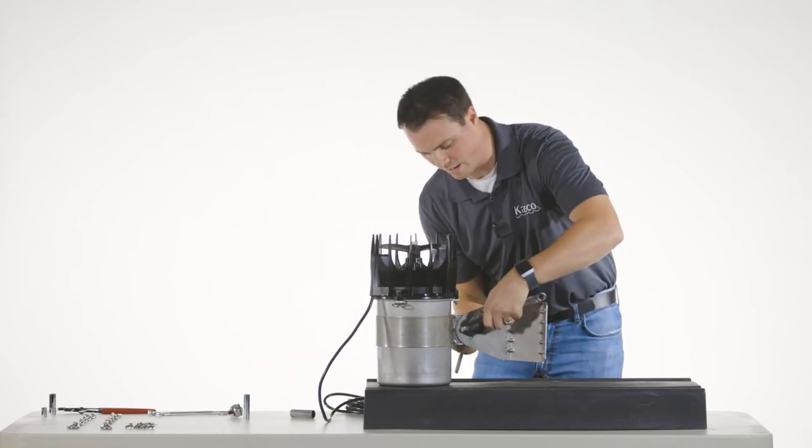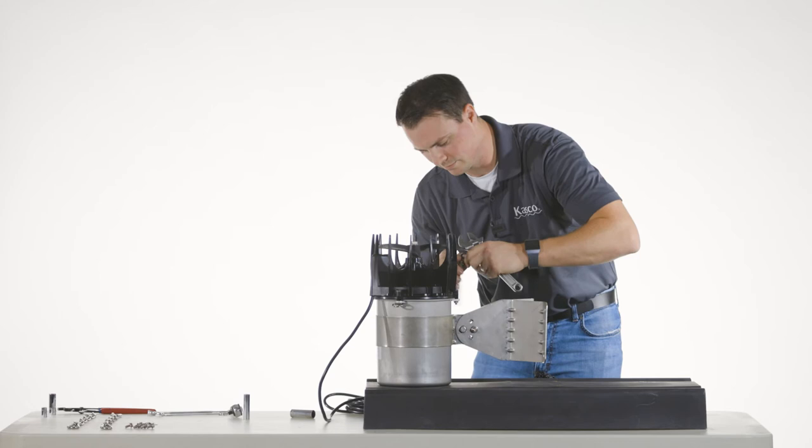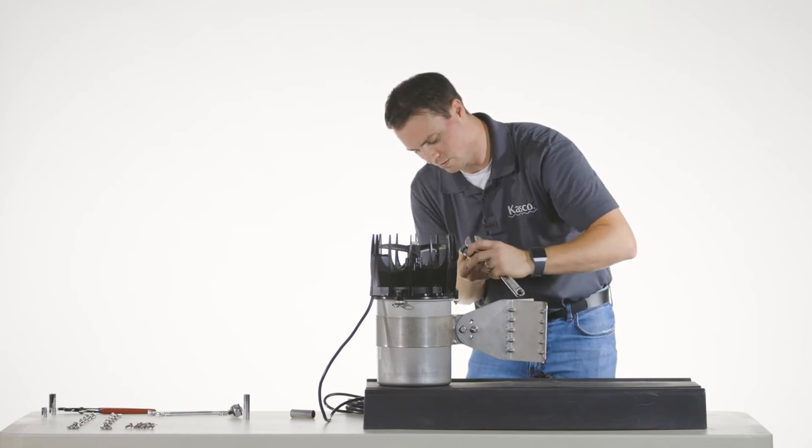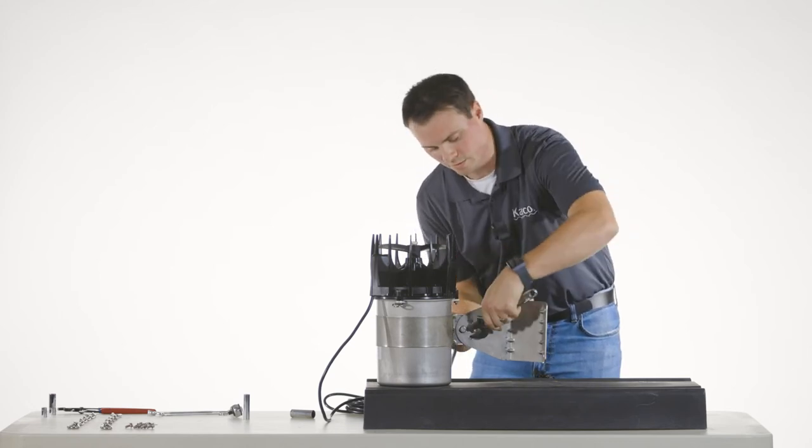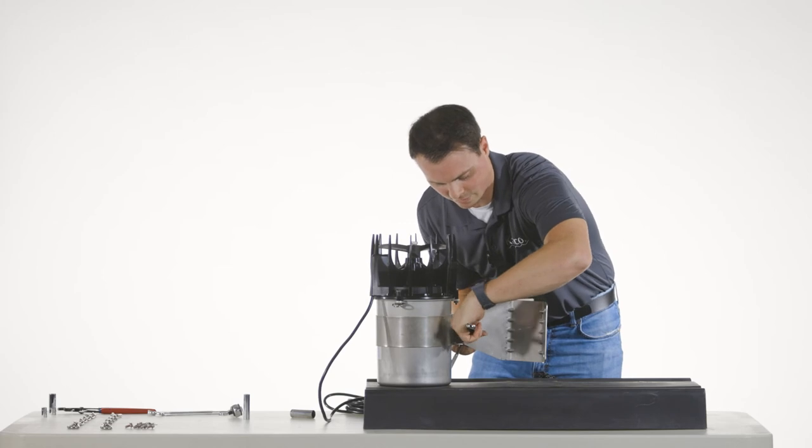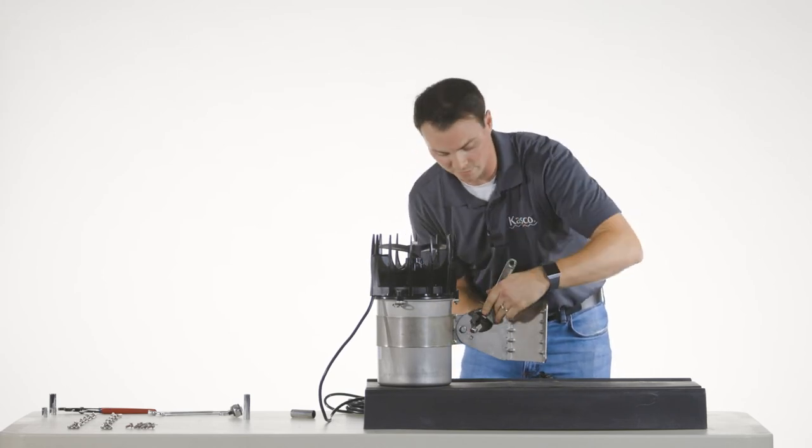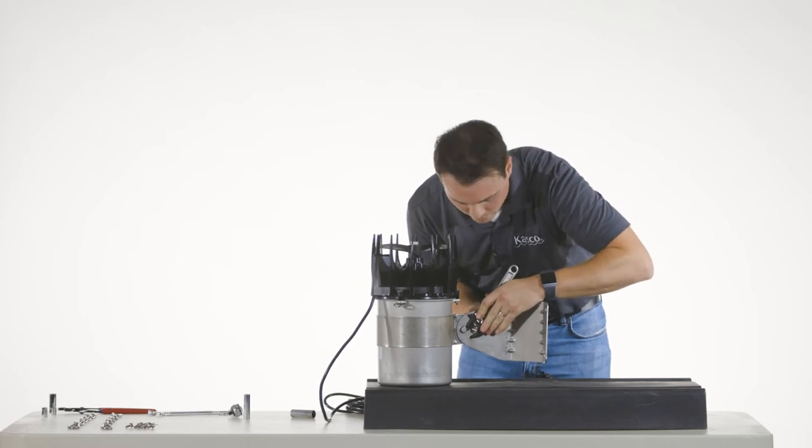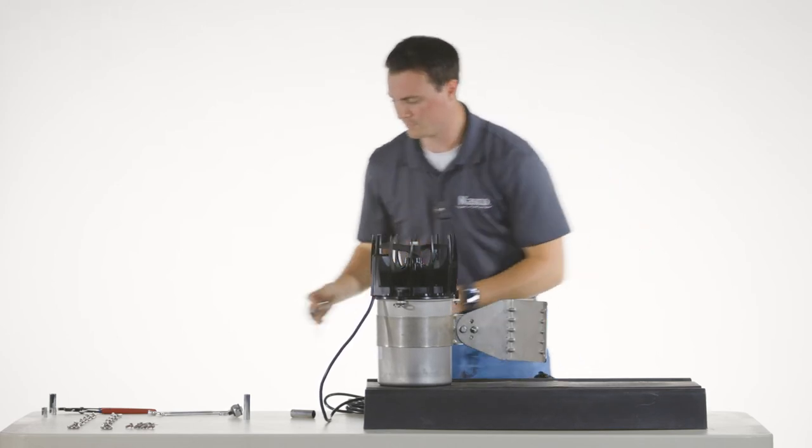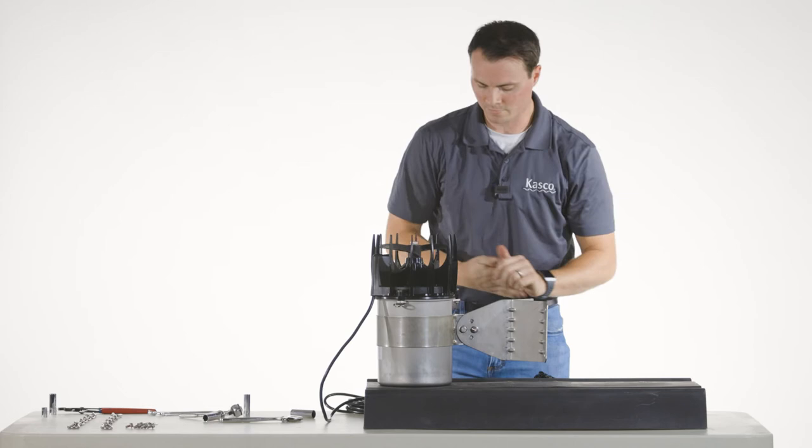And this will be a 9/16ths socket or wrench. And then holding it with a wrench, on the opposite side to make sure it doesn't sit and spin. Got that snug? All right.